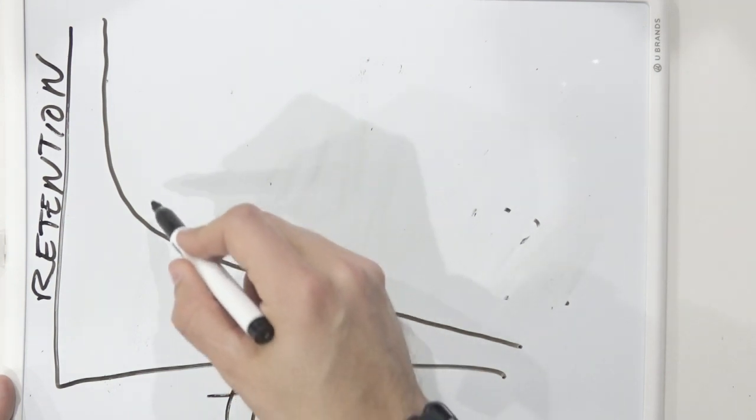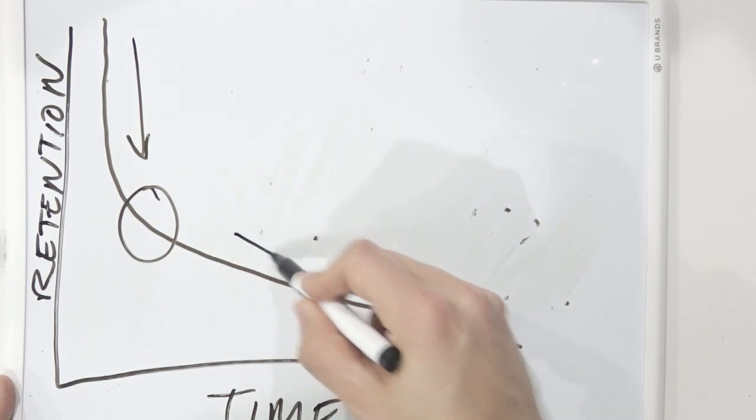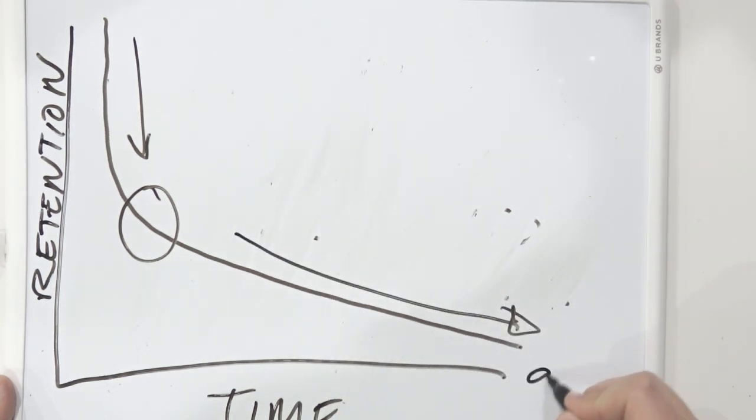This is a pretty standard SaaS retention chart. We almost always see the steepest drop-off during the onboarding process, an inflection point, and then a steady decline in users over time. Let's take a closer look at the ten most common reasons why customers churn and how to stop them. I'll show you how to spot each one and give you a few steps you can take to prevent them.